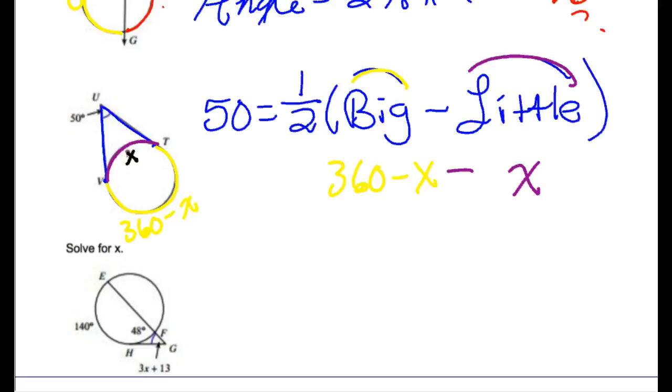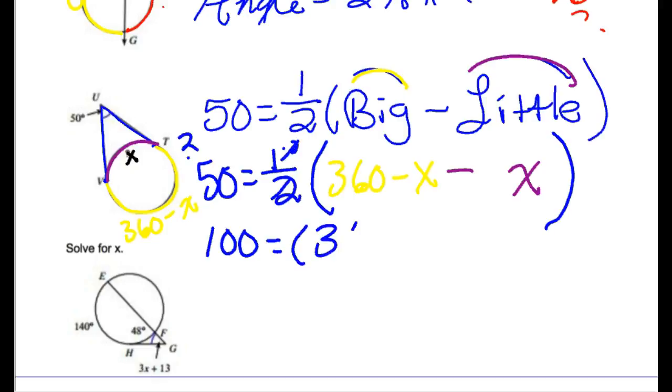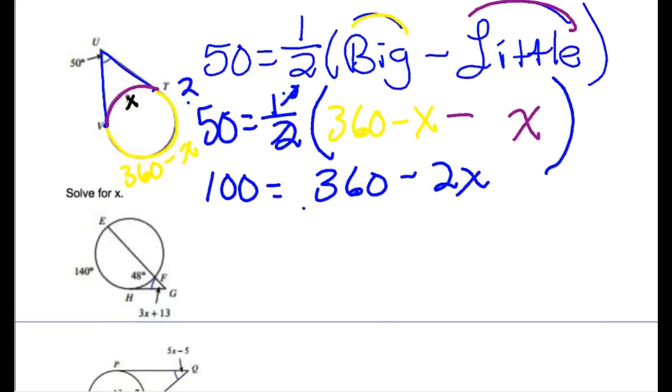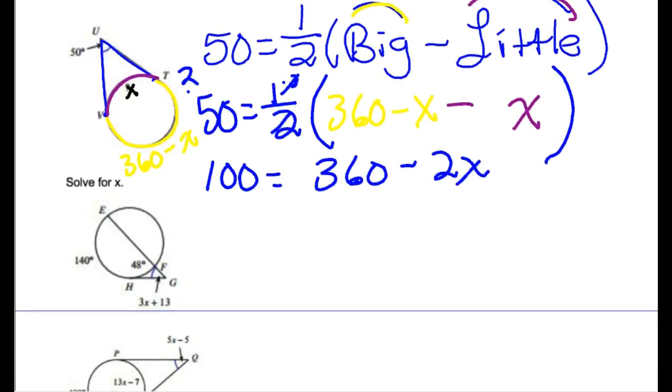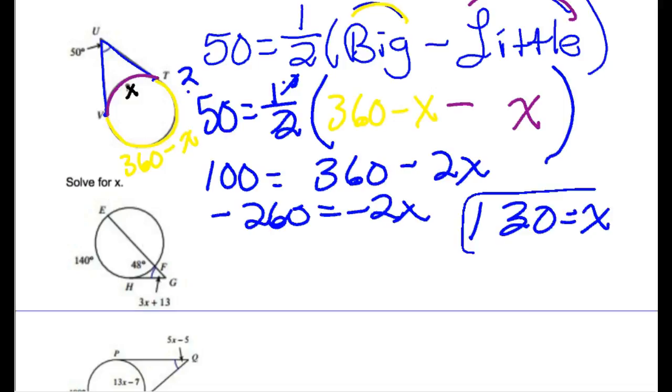I'm going to rewrite the rest of this. I have my angle equal to one half of big minus little. Now I know you've been taught to distribute the half in, but it's often easier just to get rid of it. I'm going to double both sides. If I double both sides I get 100 over here, and it'll cancel these off. So in the parentheses I'm going to have 360 minus x minus another x, which is going to be minus 2x. If I solve this one, I'll subtract 360 from both sides. I'll get negative 260 is equal to negative 2x. When I divide both sides by negative 2, I get x or the purple arc is equal to 130.